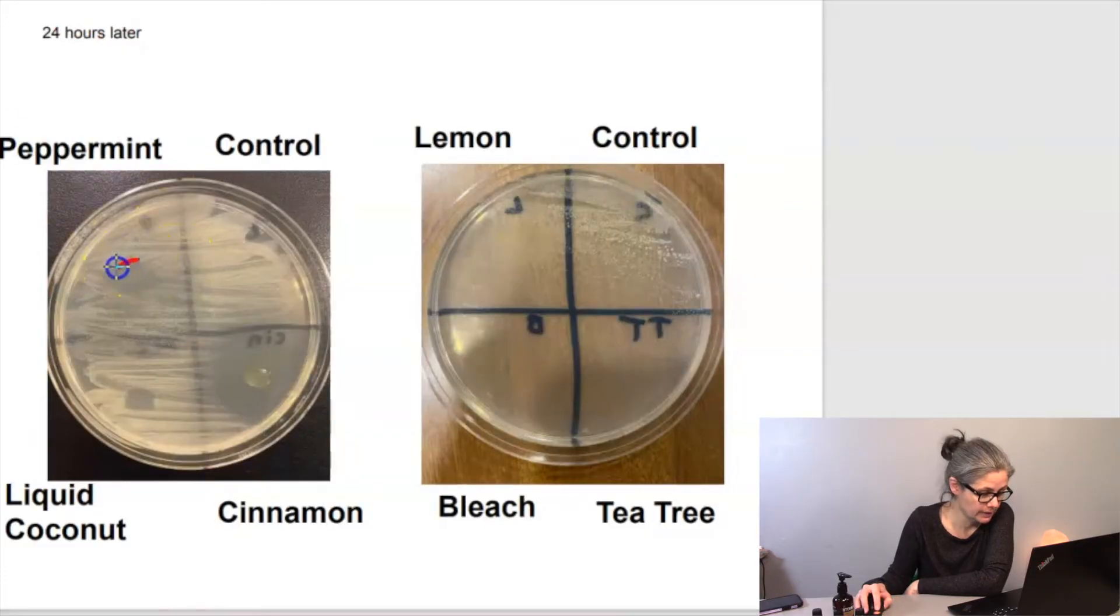So look at here, the peppermint, right where I put the one drop, there's no growth at all. That's super cool. Right here, where I put one drop of the liquid coconut, there's no growth either. The control is total growth, which is great.